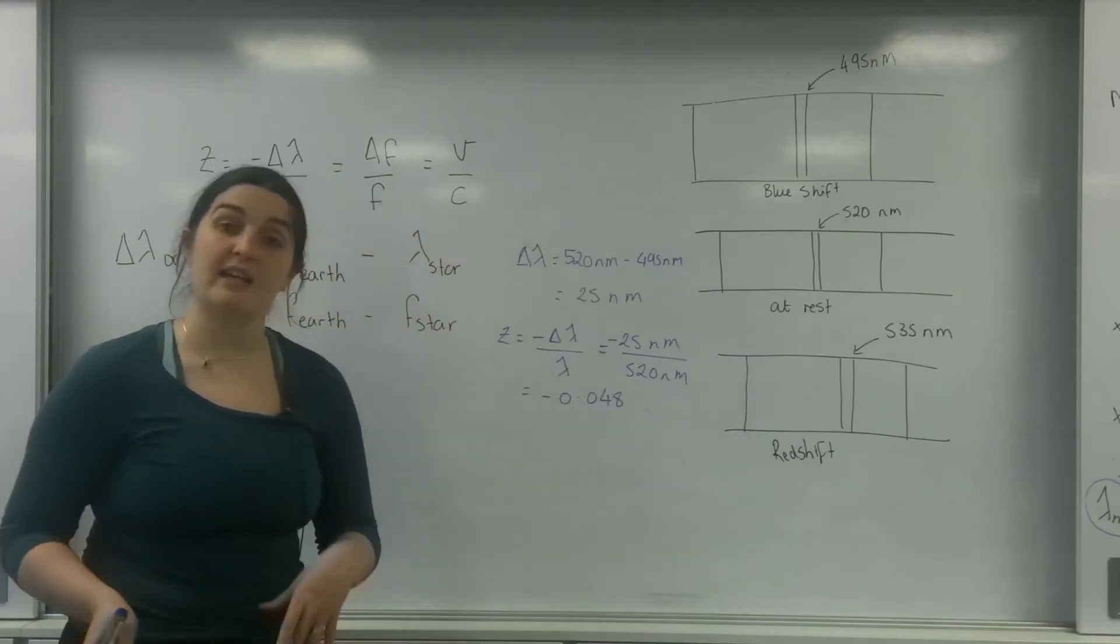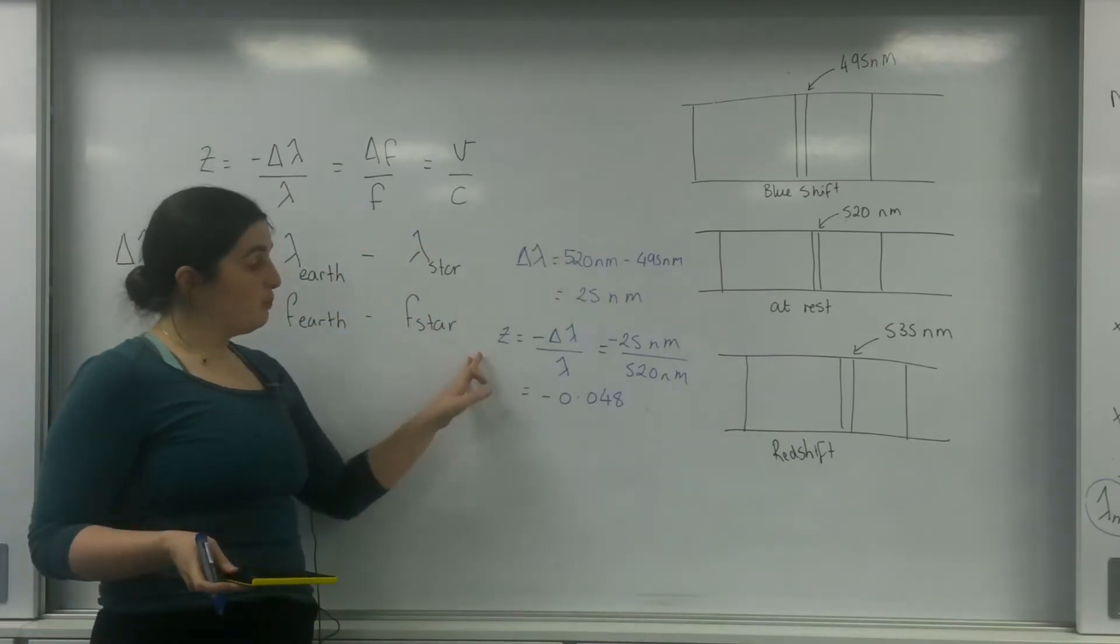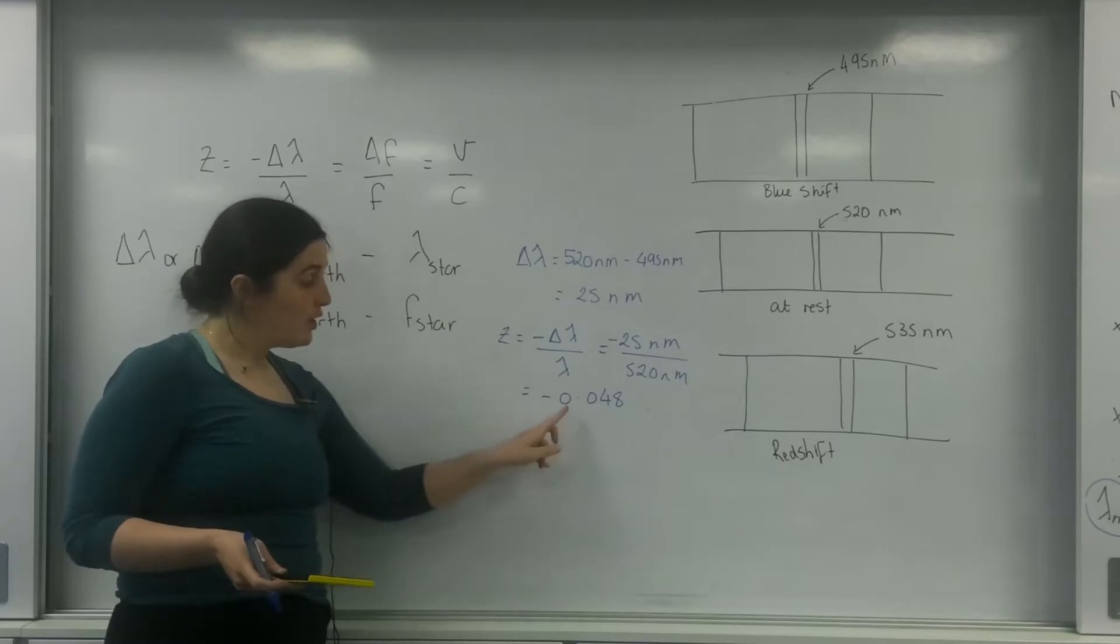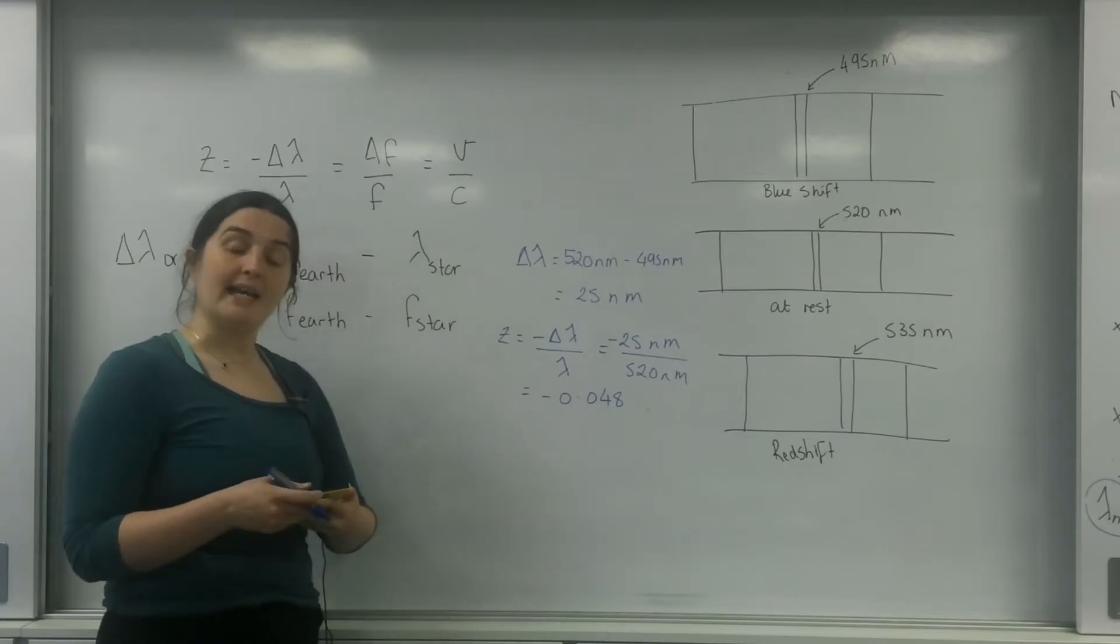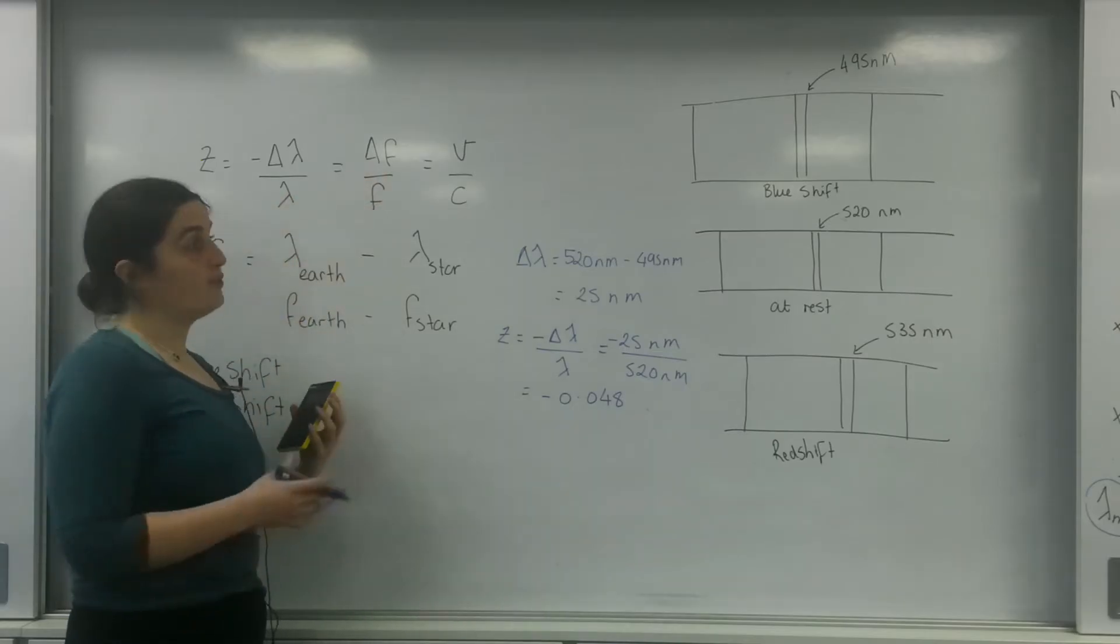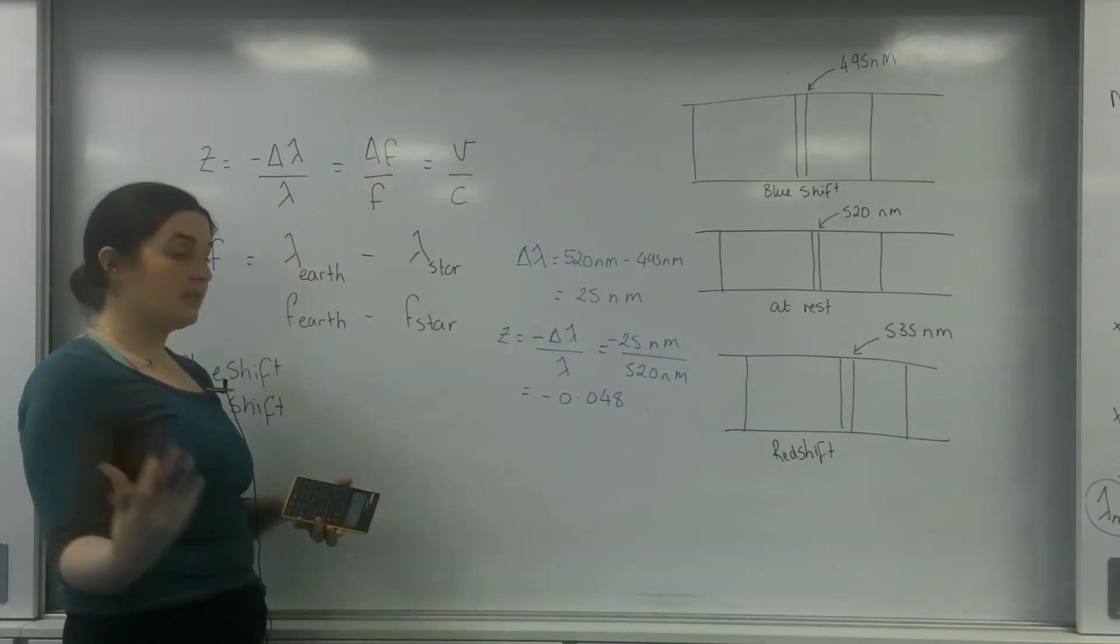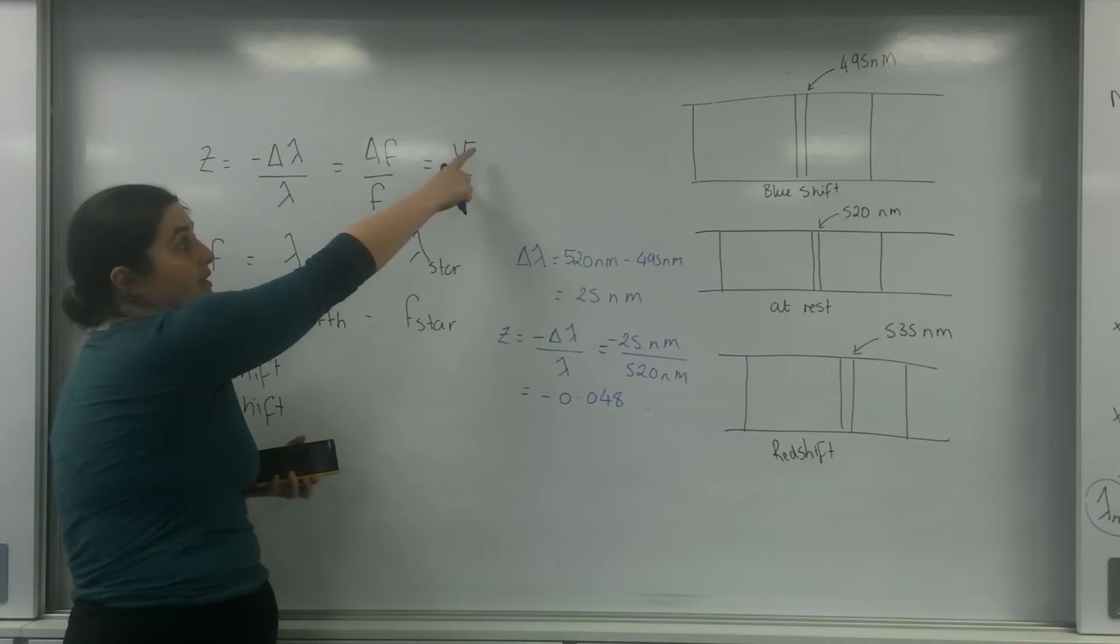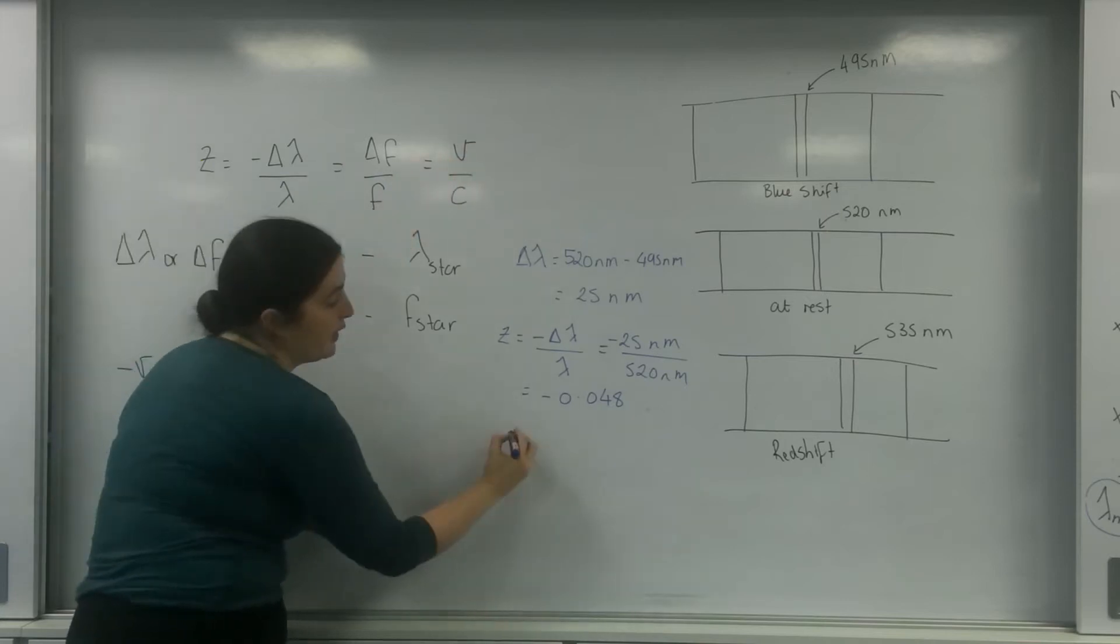It hasn't got a unit. It's just a Doppler shift. So this is a Doppler shift, a negative Doppler shift of 0.048. And now I can use any formula I wanted to work out the change in frequency. I'm going to use it to work out the velocity that the object's moving away from me.